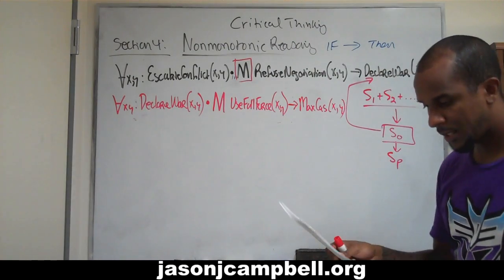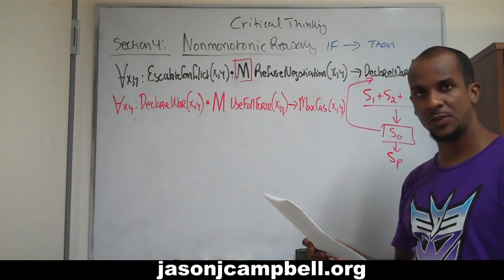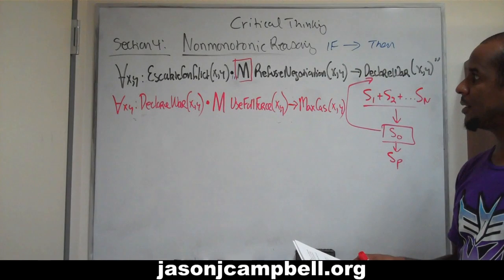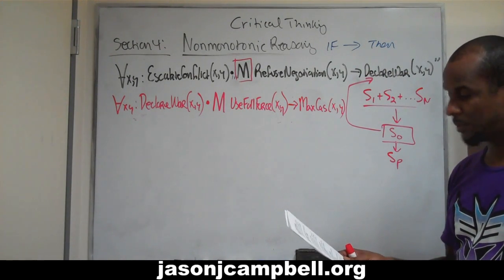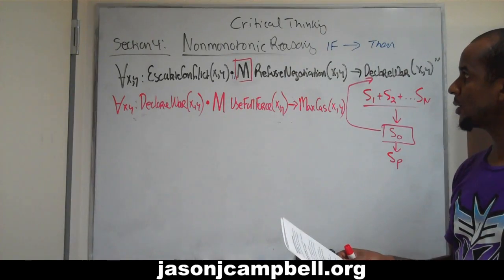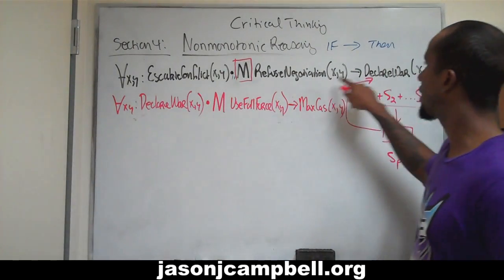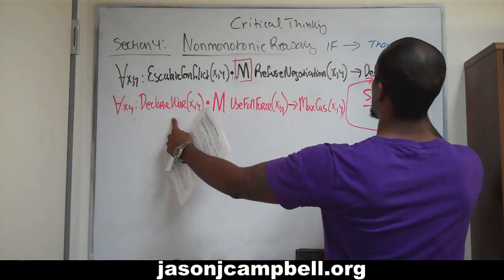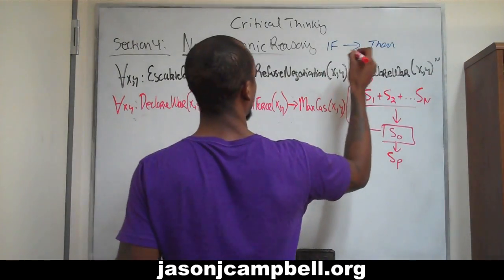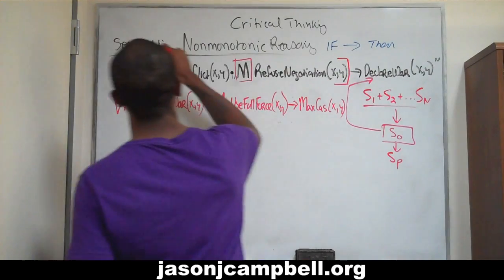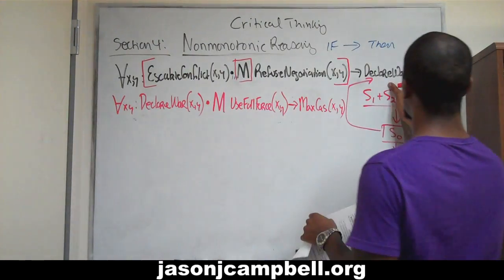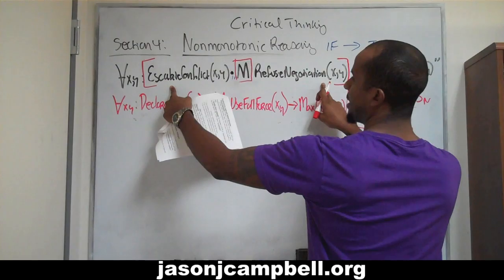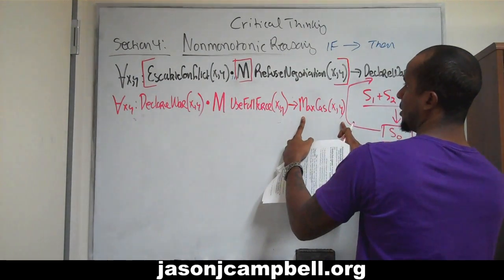The final thing we have to do to end this introductory section into non-monotonic logic is to identify the syllogism, and the syllogism should be obvious. What we had in the first part was a conditional as our main connective — if-then. We can see that the declaration of war — x and y declare war — connects this main antecedent with this consequence.